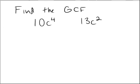Here, let's find the greatest common factor of two monomials. So on the left, we have the monomial 10c to the power of 4, and on the right-hand side, we have the monomial 13c squared.